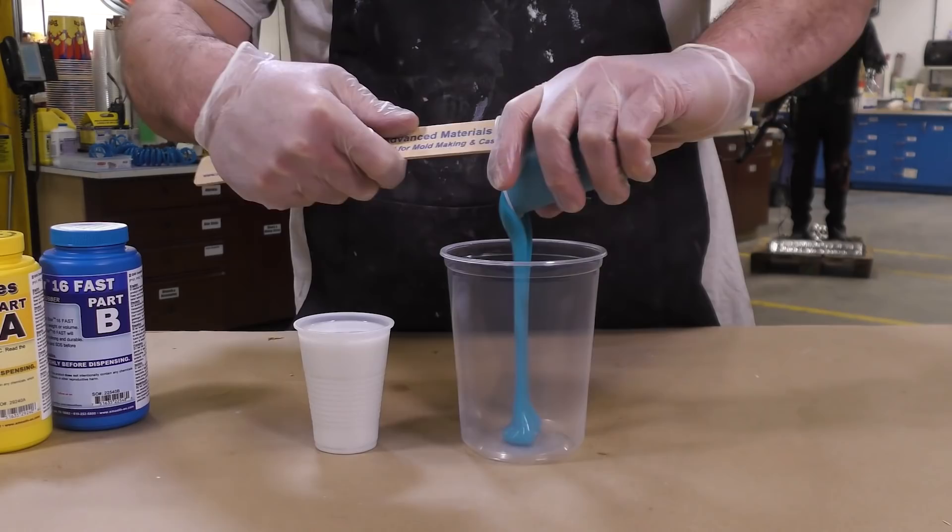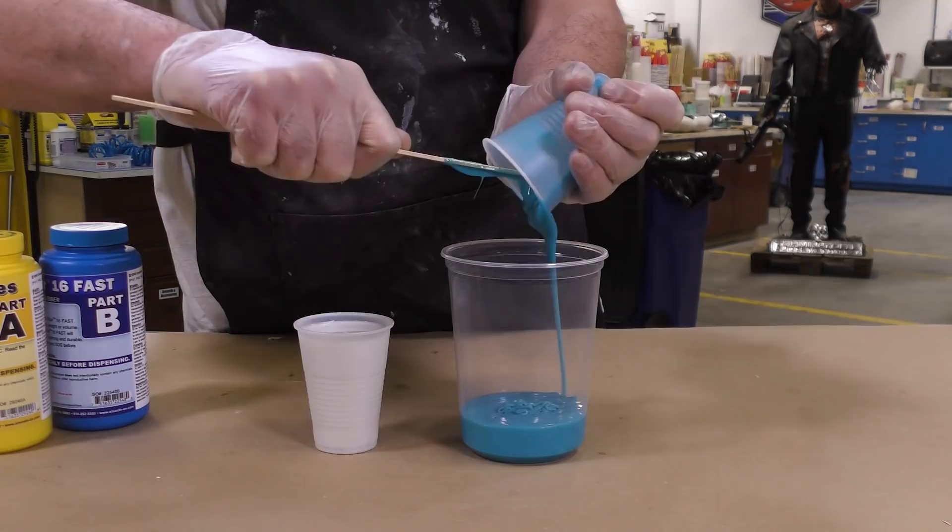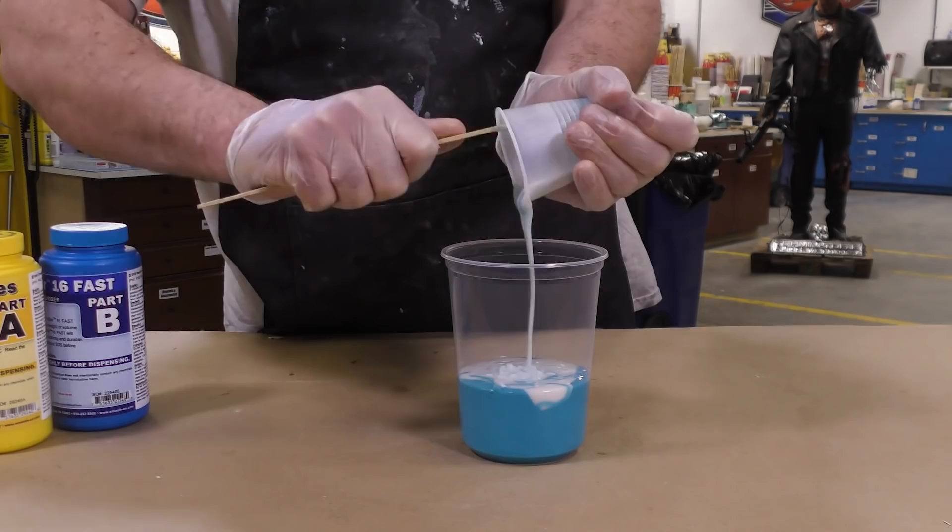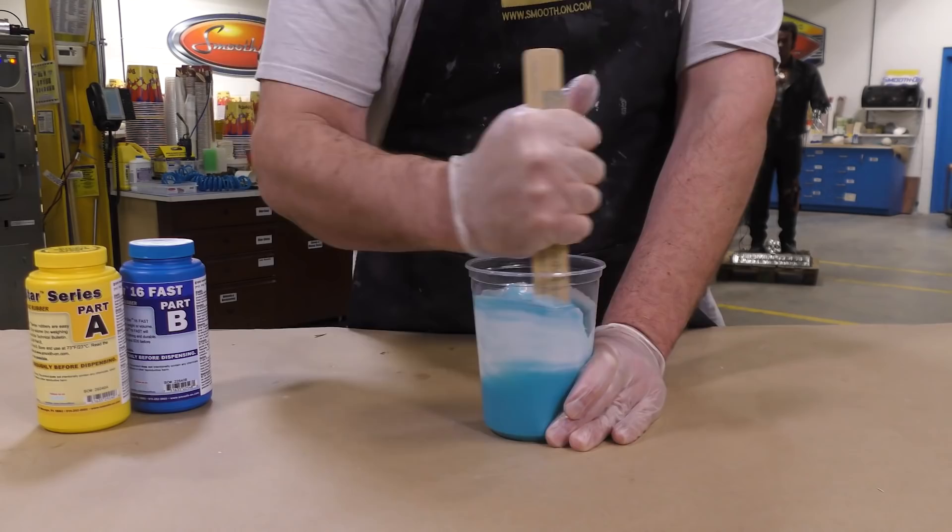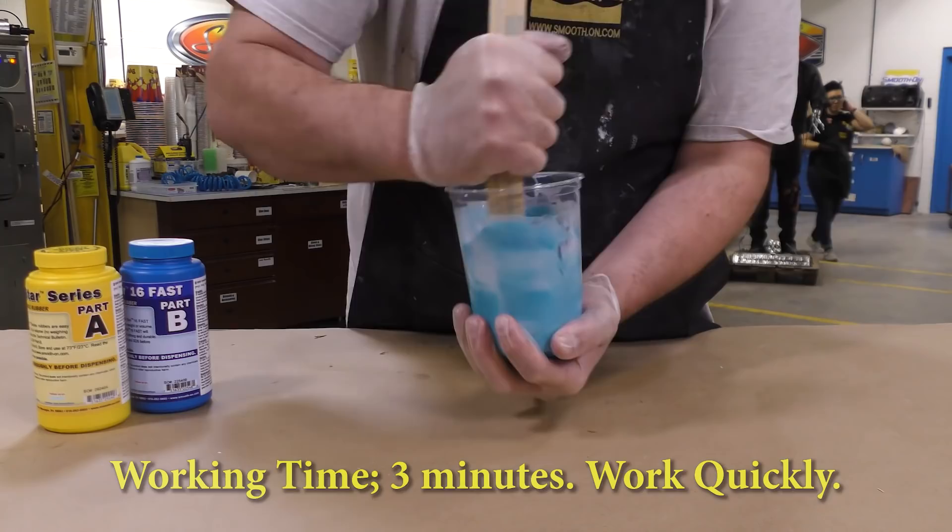Once we have the material dispensed, a clean mixing container is used to combine the two components together. As you will hear me say many times, you want to scrape the sides and scrape the bottom of your mixing container when you're mixing two components together to get a really good mix between them. You shouldn't see any streaking in your material.